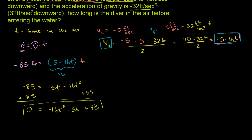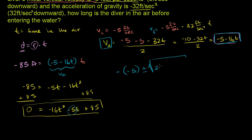This is a quadratic equation, so we use the quadratic formula. Here a = negative 16, b = negative 5, and c = 85. So t equals negative b — which is negative (negative 5) = positive 5 — plus or minus the square root of b squared (which is 25) minus 4 times a (negative 16) times c (85), all over 2 times a (which is negative 32).